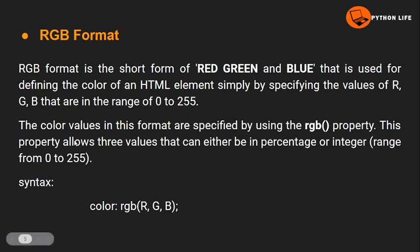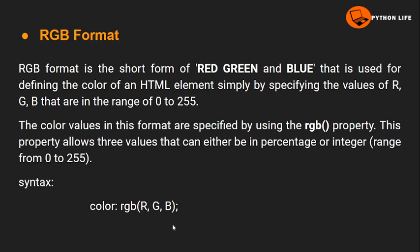The color values in this format are specified by using the RGB property. The syntax is: color: rgb(red, green, blue). The three parameters are red, green, and blue.